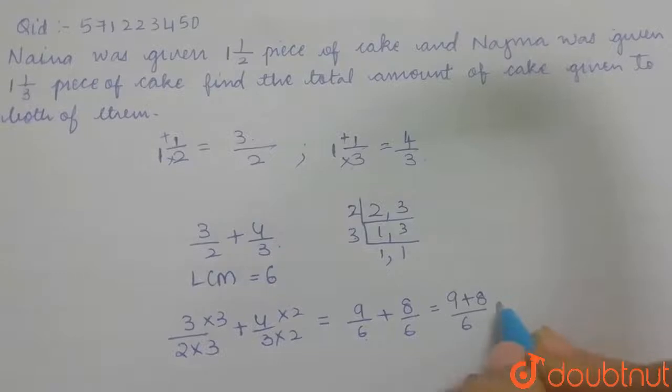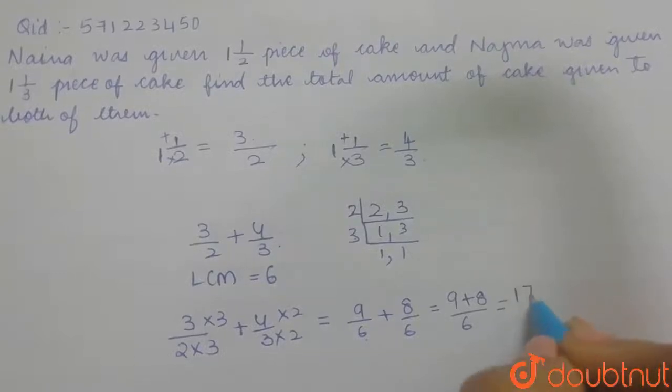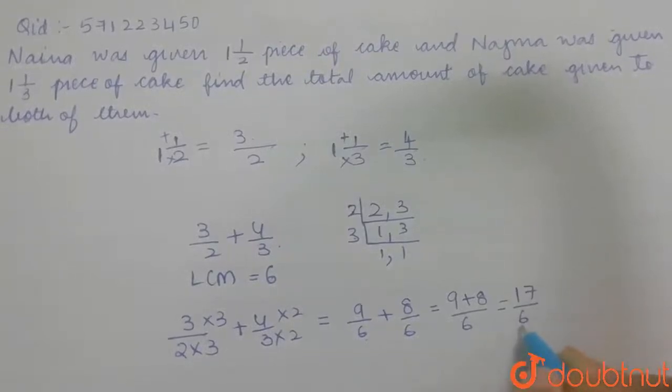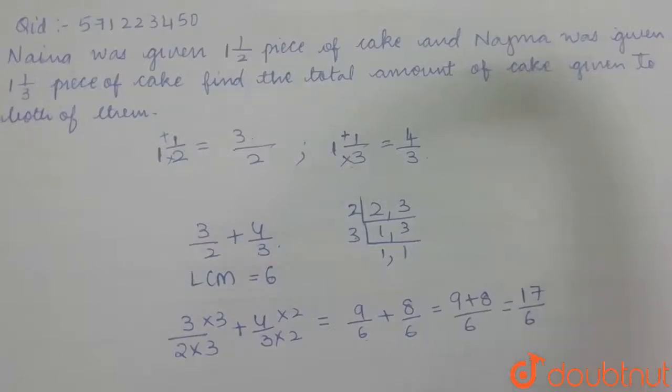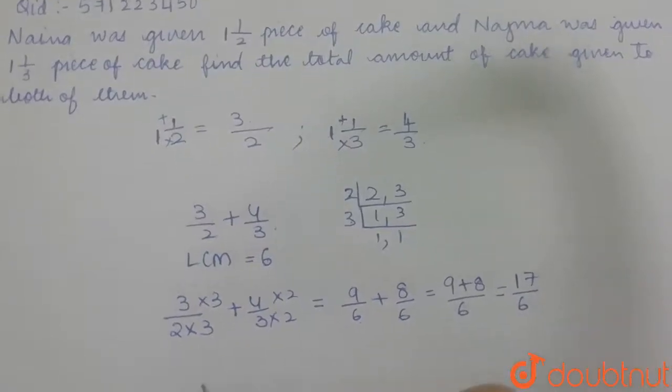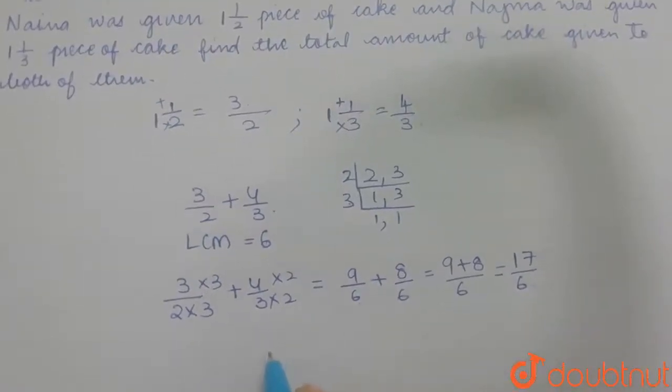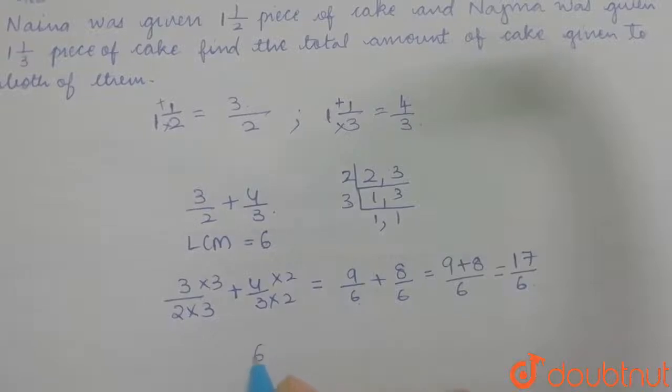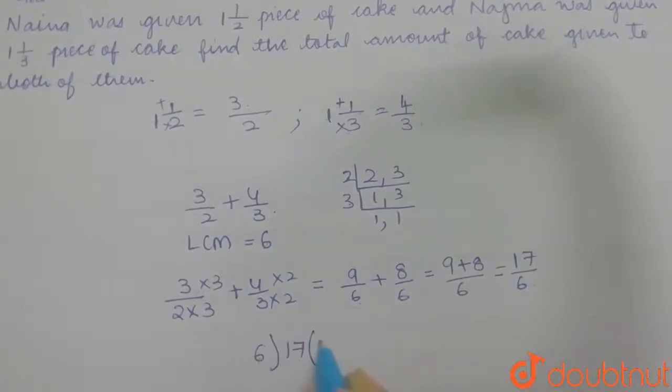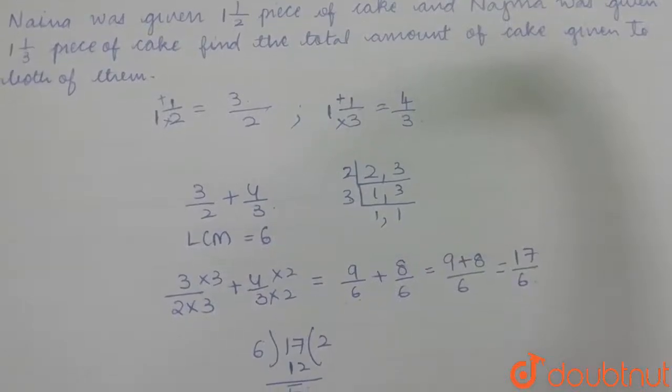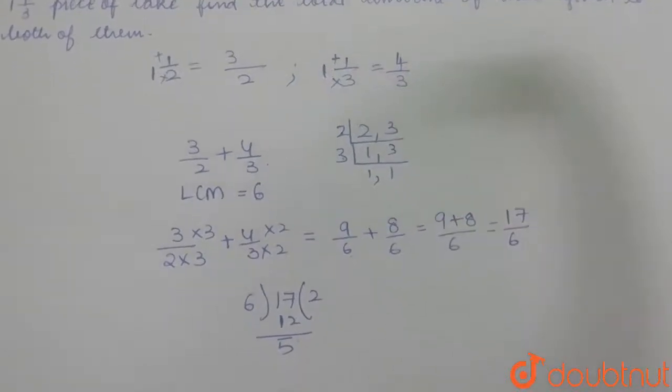This gives 17/6. Now we are supposed to convert this fraction into a mixed fraction. How do you do that? We divide 6 into 17. 6 times 2 is 12, and the remainder is 5.